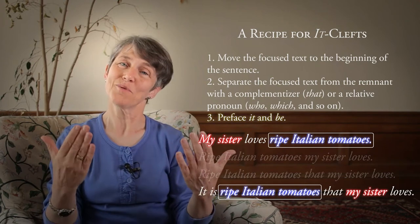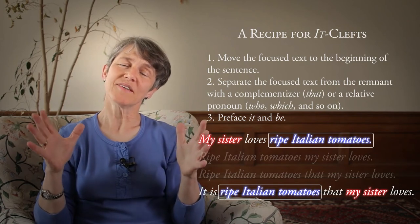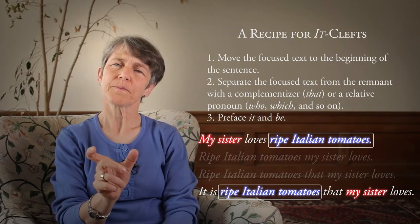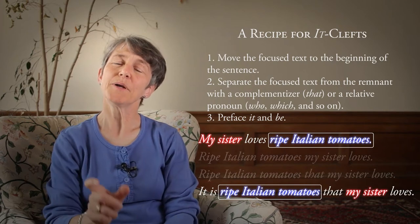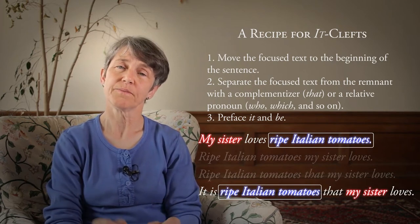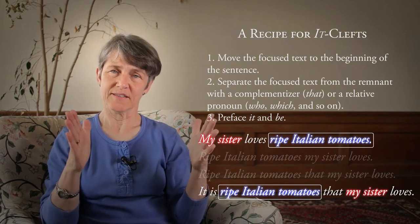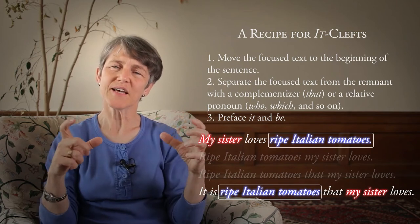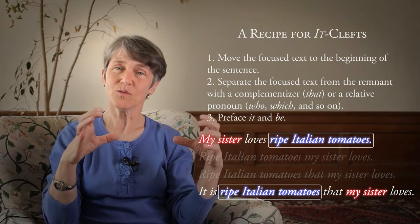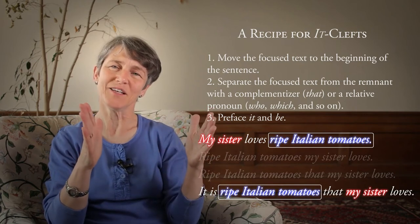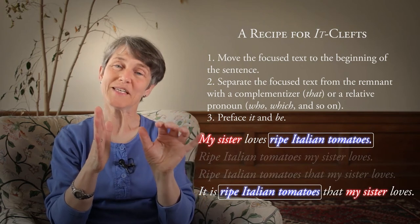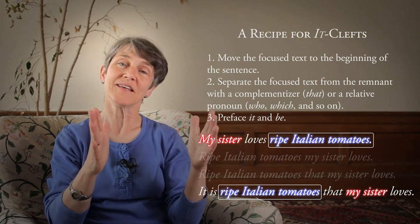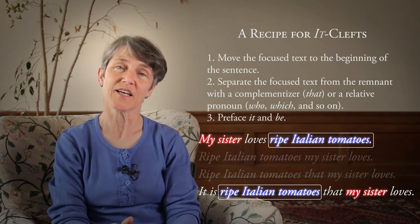So it's quite a long process. But the reason it's important to think of that whole recipe is that the same sequence of words can appear as a constituent in one context, but may not be a constituent in another context. So when you're testing a sequence of words in a sentence, you need to test it relative to that sentence. That's why in this case we start from the sentence — the question was, in the sentence 'My sister loves ripe Italian tomatoes,' is 'ripe Italian tomatoes' a constituent. And that's crucial for using it as a diagnostic for constituency.